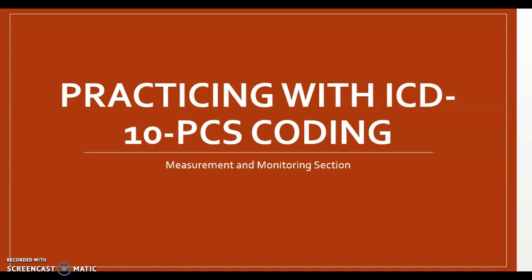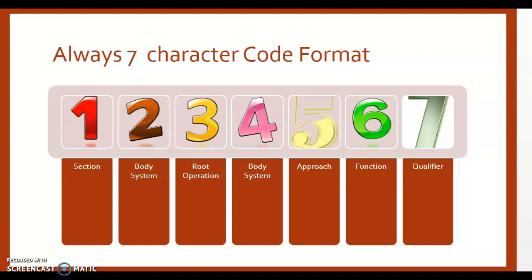Just like all of our other PCS codes, the measurement and monitoring section uses the same seven-character format. Our first character is always our section, second character is our body system, third character is our root operation, fourth character is the body system, fifth character is our approach, sixth character is the function, and the seventh character is the qualifier.